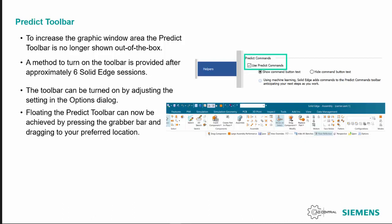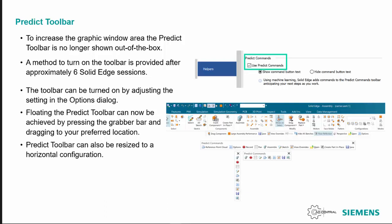The predict toolbar is now a floating toolbar. You just need to grab hold of the edge — the grabber bar — and move it to your defined location. It can also be positioned as a vertical bar just by dragging and dropping.